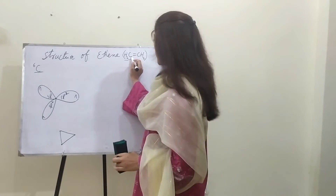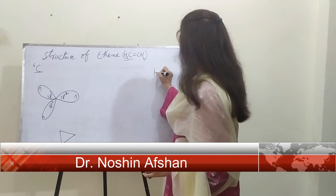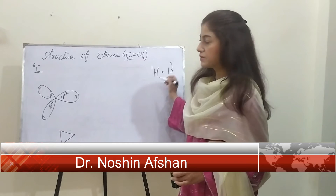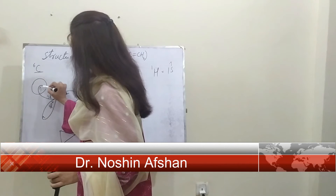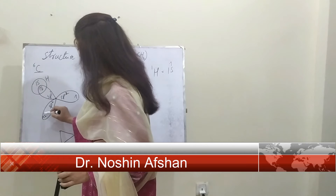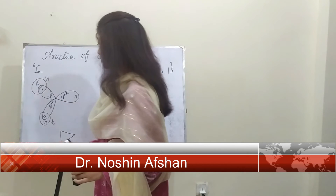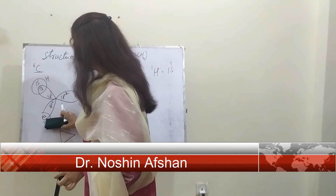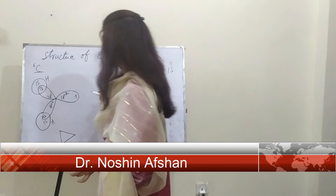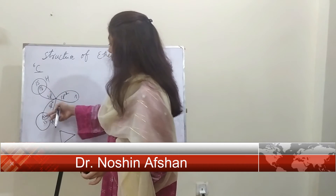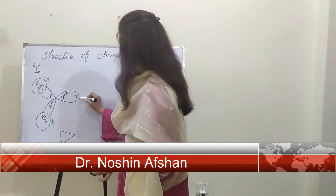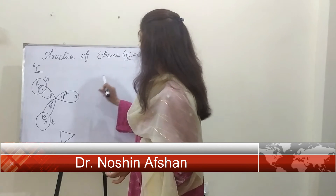This carbon atom is attached with two hydrogen atoms. Hydrogen has atomic number 1 and that one electron is placed in the 1s orbital. That 1s orbital would overlap with one sp2 hybrid orbital of carbon, and the other hydrogen's 1s orbital would overlap with the other sp2 orbital. In this way, the two hydrogens have overlapped with these sp2 hybrid orbitals. Now the case is with the other carbon atom.